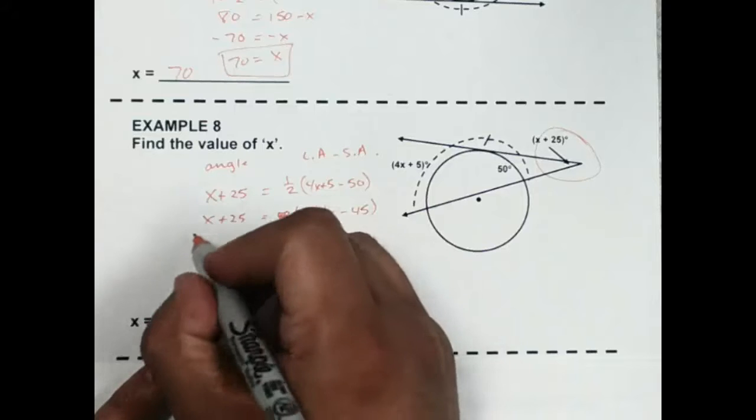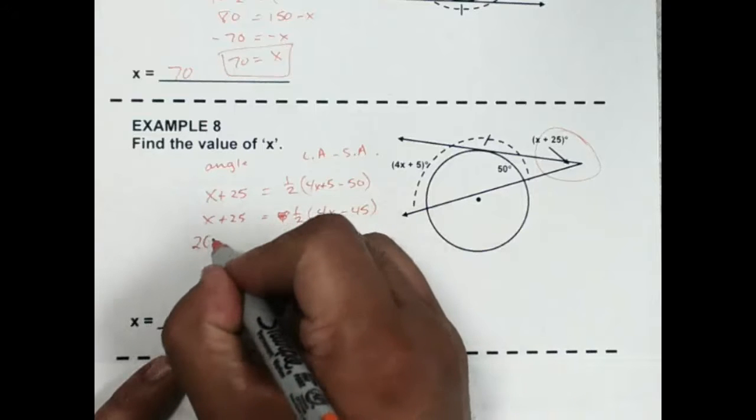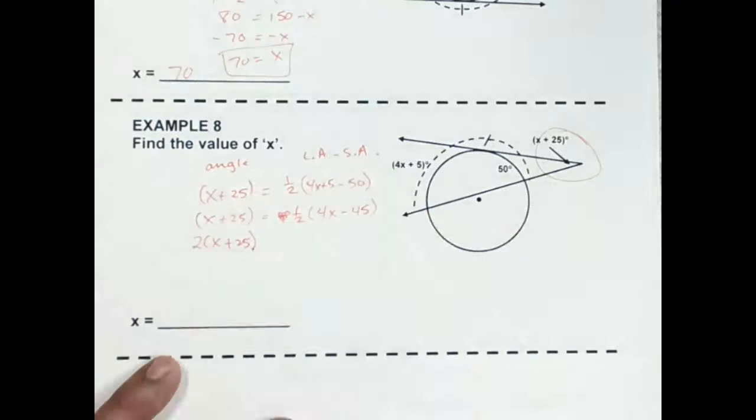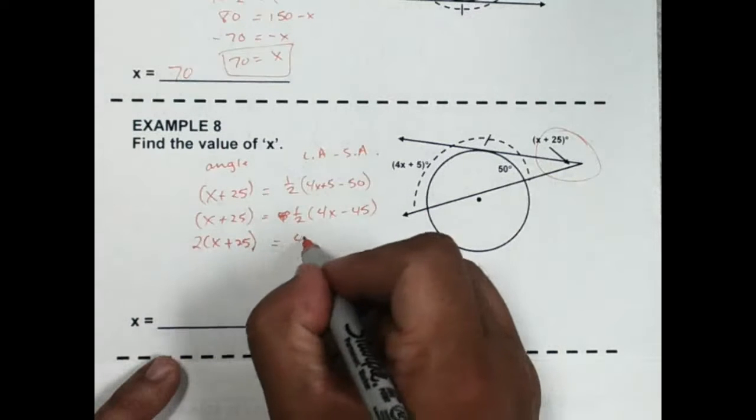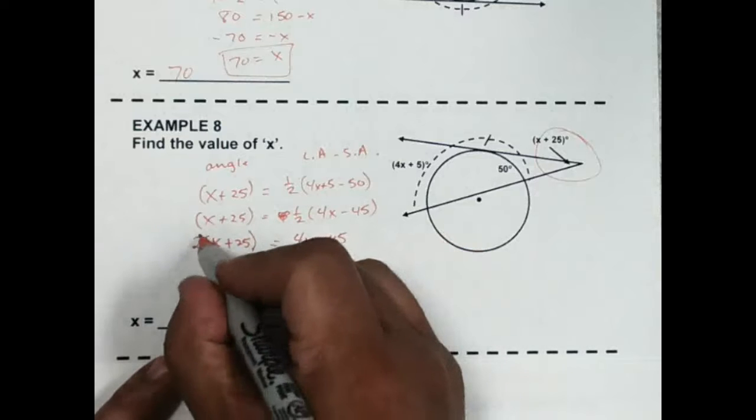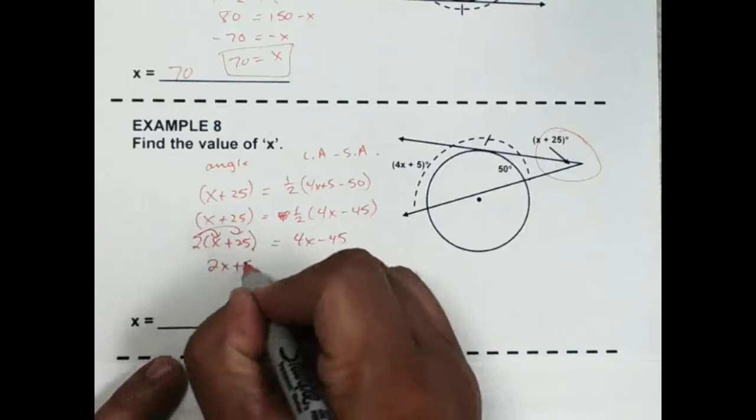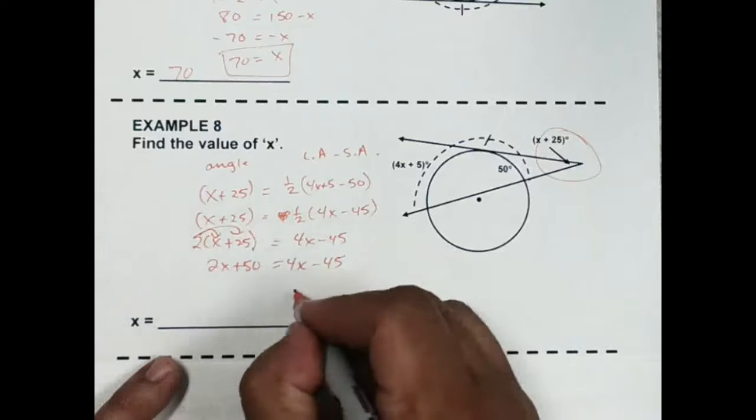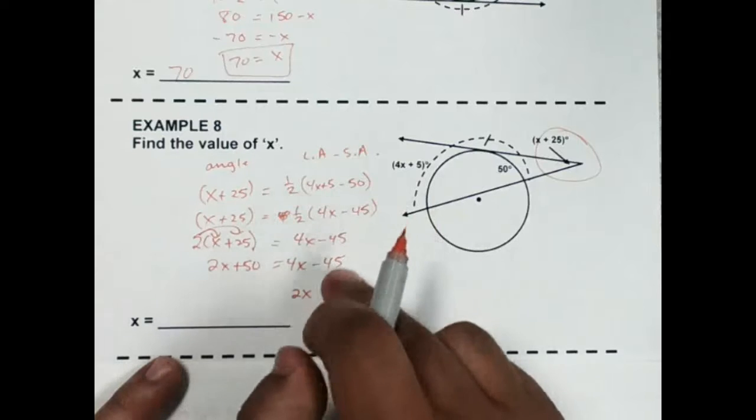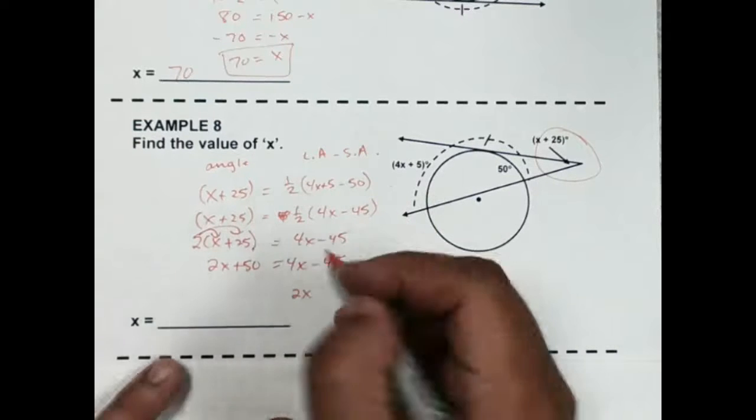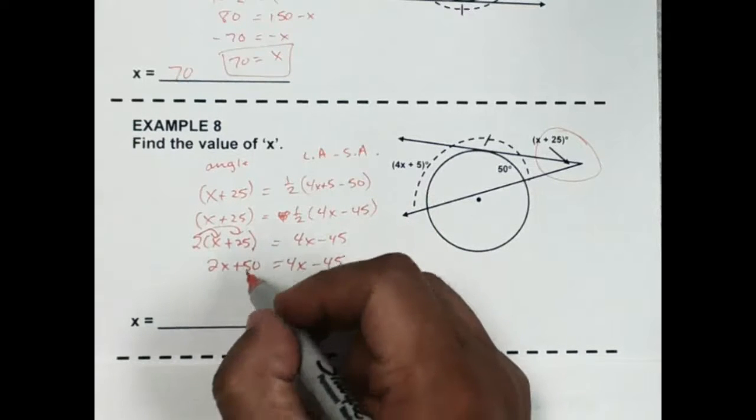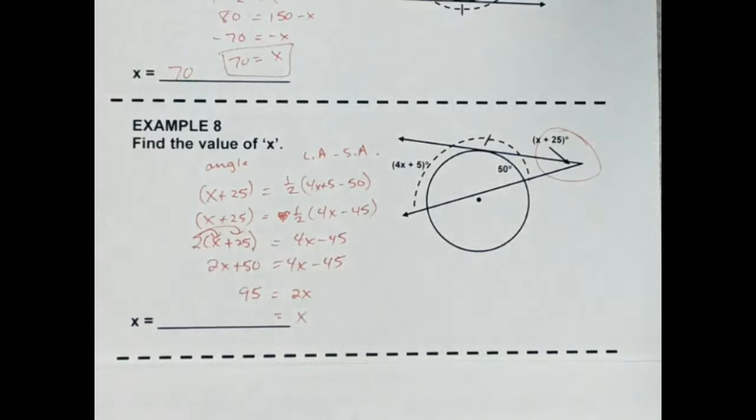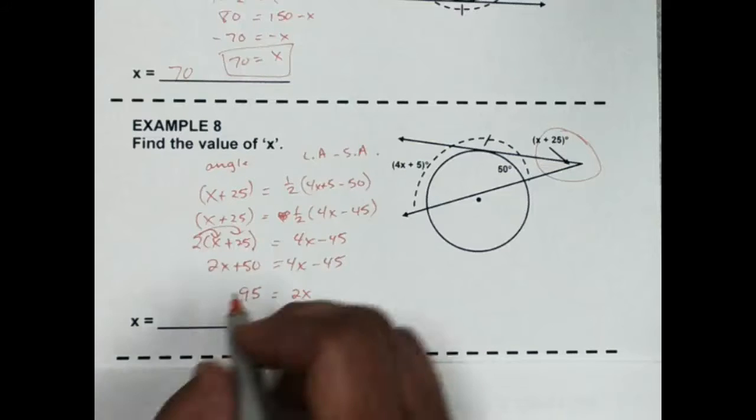Multiply both sides by 2. Here you have to be careful because you're going to actually have 2x plus 25 in parentheses. I guess I should have put those parentheses on there. And then this becomes 4x minus 45. So I'd have to distribute: 2x plus 50 is equal to 4x minus 45. If I move my x around over here, I'm going to get 4x minus 2x, which is 2x. Then I would move this minus 45 over to the left, which I'm going to have to add 45. 50 plus 45 is going to give me 95. Divide by 2, and that is going to give you 47.5.